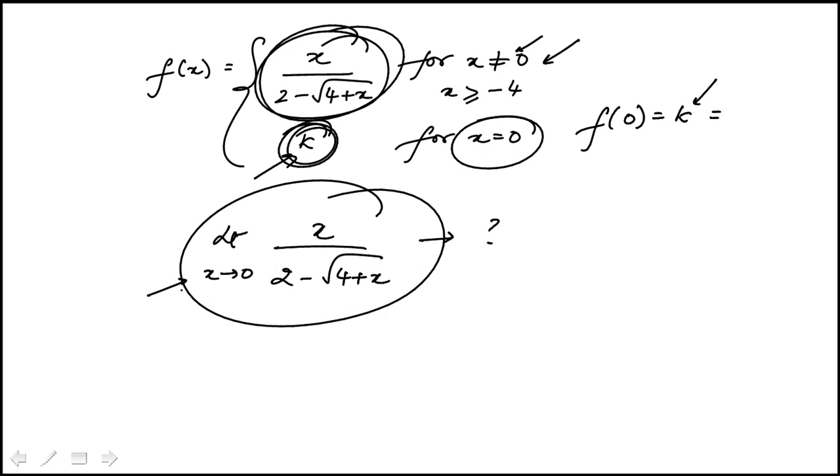You'll notice that this is a 0 over 0 form. So you can use L'Hôpital's rule, which is differentiate the top and bottom functions. So the derivative of that would be 1.